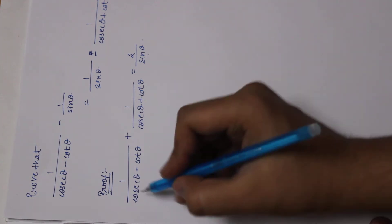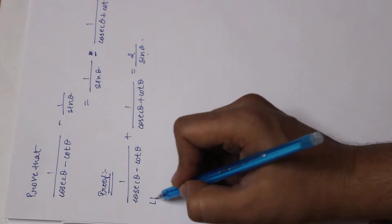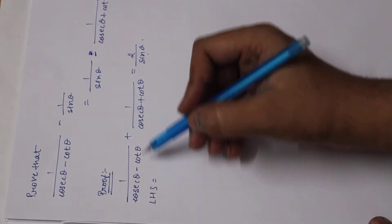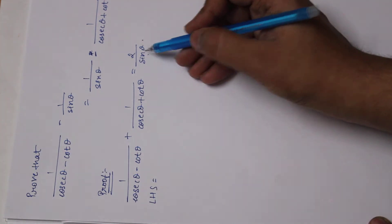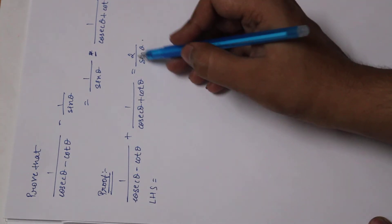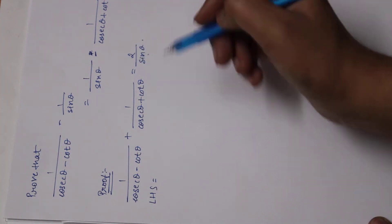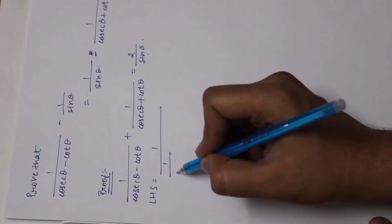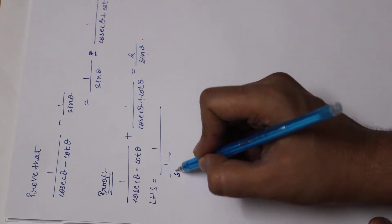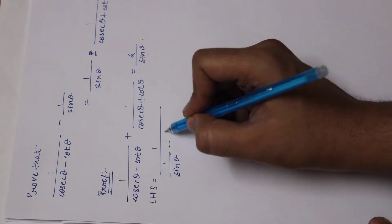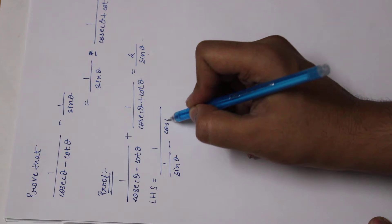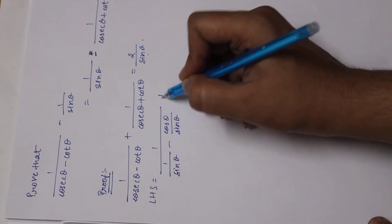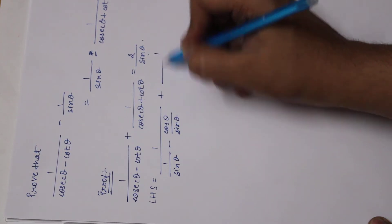So let's start with the LHS. First of all, I need to convert cosec and cot to sin and cos, because my RHS is in sin theta. So we write: 1 upon (1 upon sin theta minus cos theta upon sin theta) plus 1 upon...